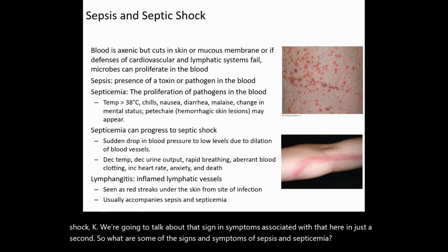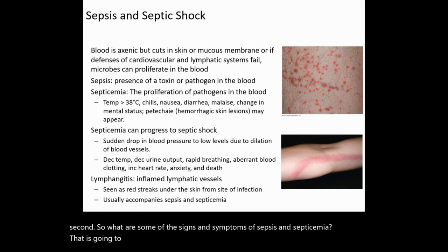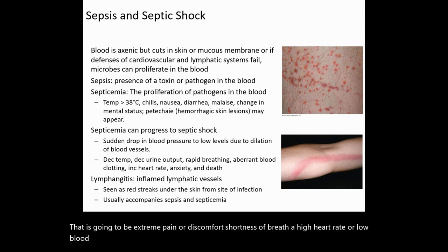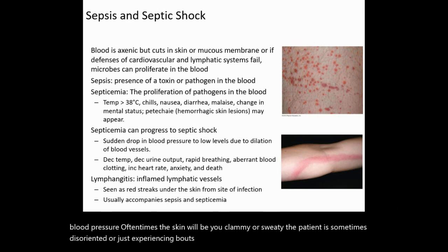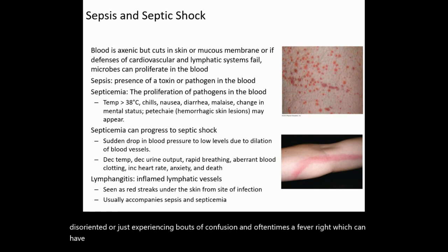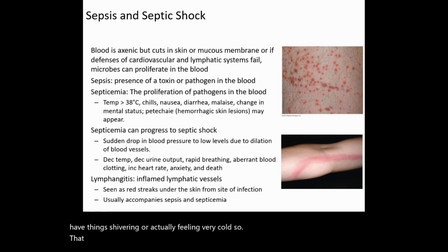Signs and symptoms of sepsis and septicemia include extreme pain or discomfort, shortness of breath, a high heart rate, or low blood pressure. Oftentimes the skin will be clammy or sweaty. The patient is sometimes disoriented or experiencing bouts of confusion. There is oftentimes a fever, which can come with shivering or actually feeling very cold. These are key indicators that you need to be considering septicemia, and like I said, that can progress to septic shock.